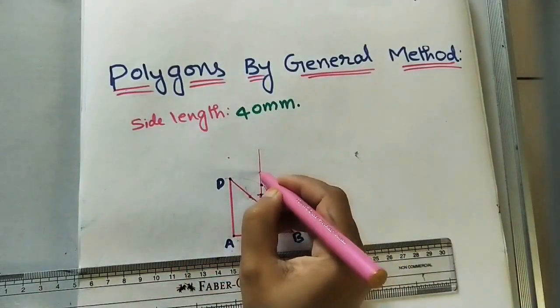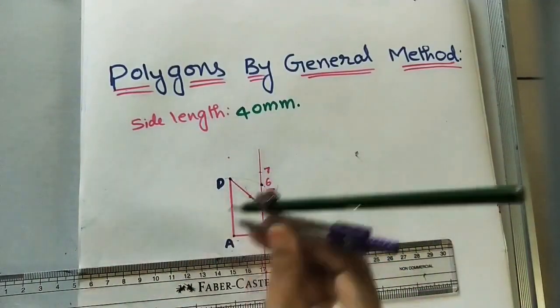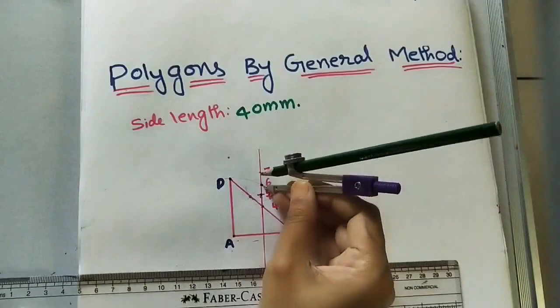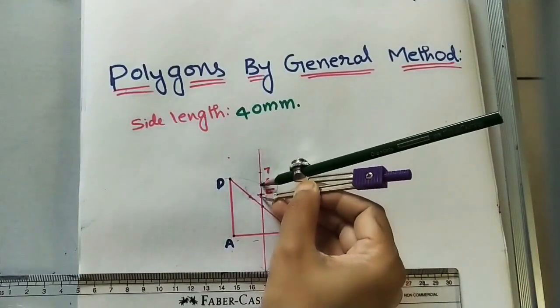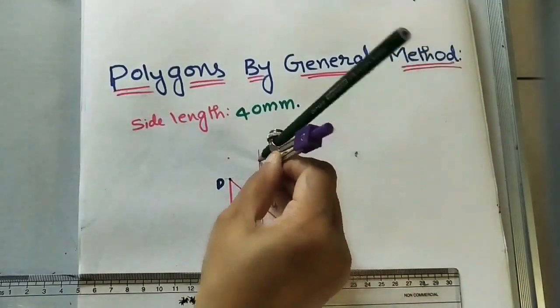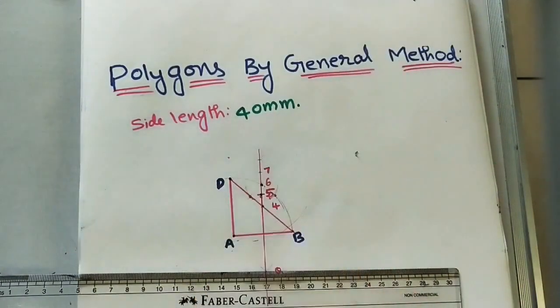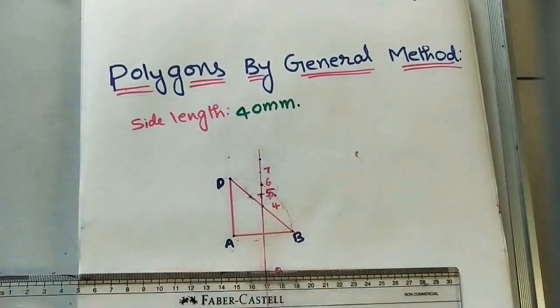To mark point 7, the distance from 4 to 5 equals the distance from 5 to 6, which equals the distance from 6 to 7, and so on. So I mark point 7 and point 8 using the same equal spacing along the perpendicular bisector.